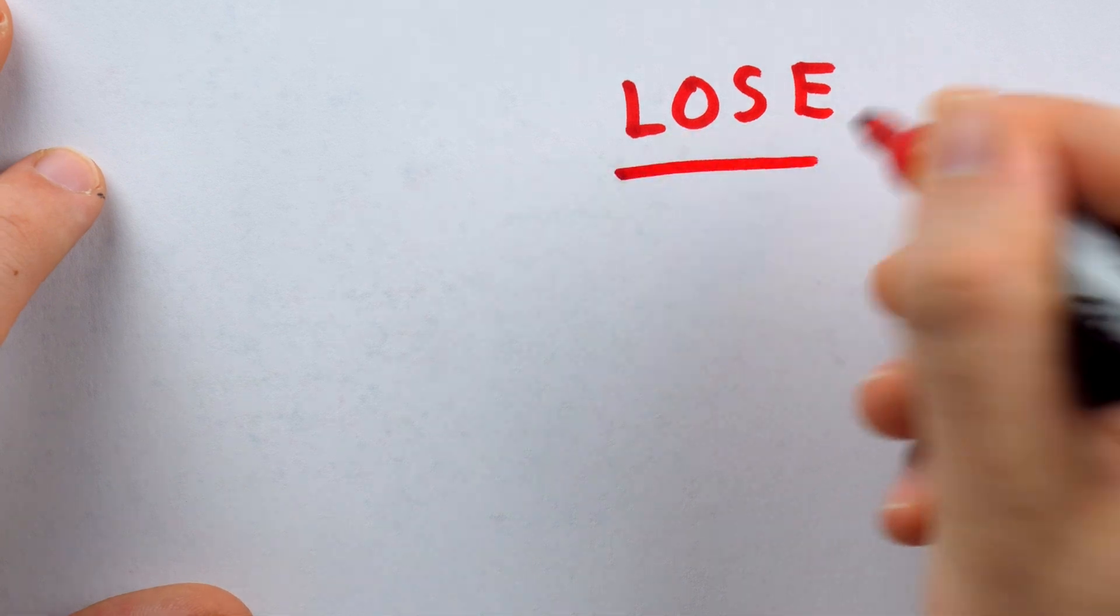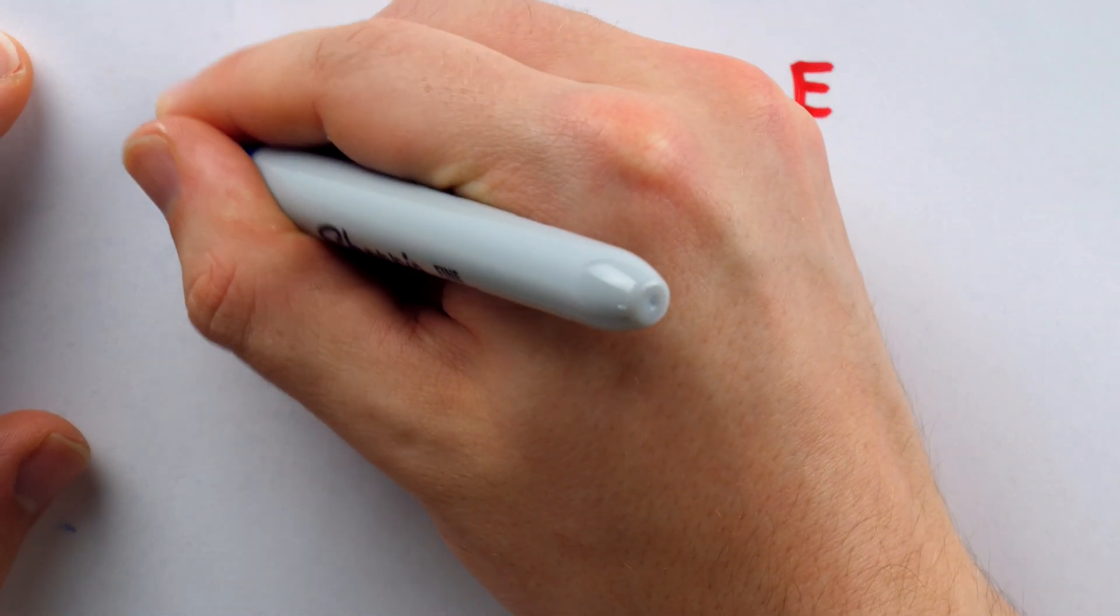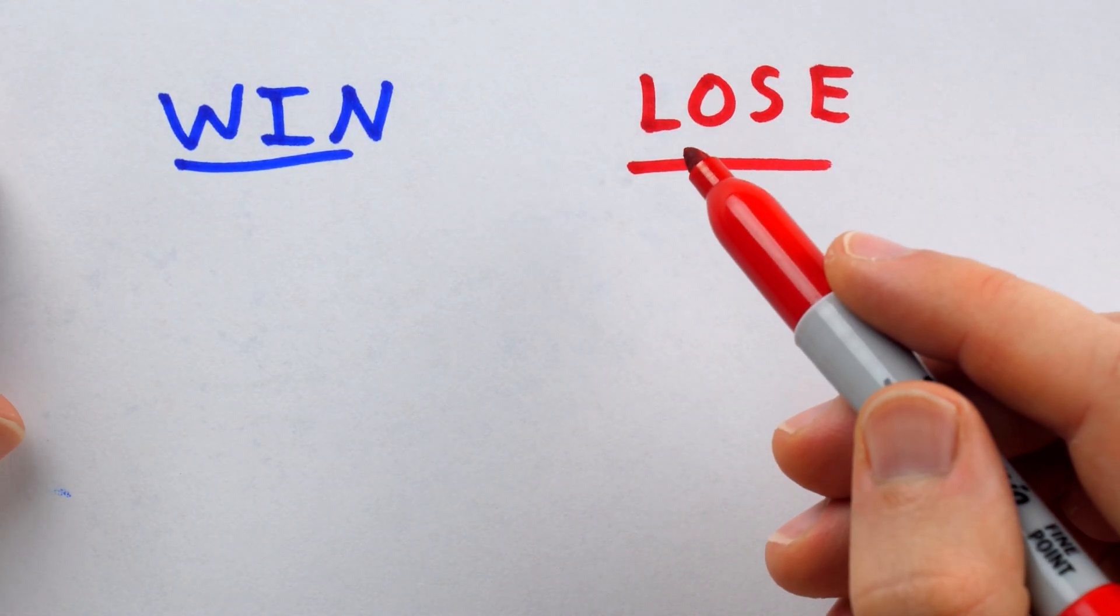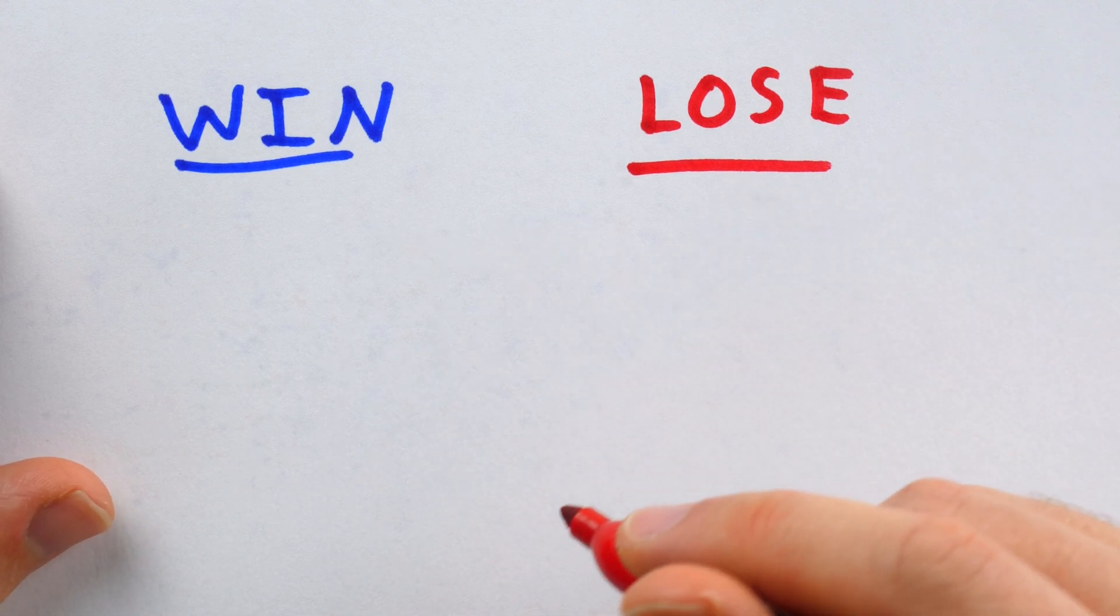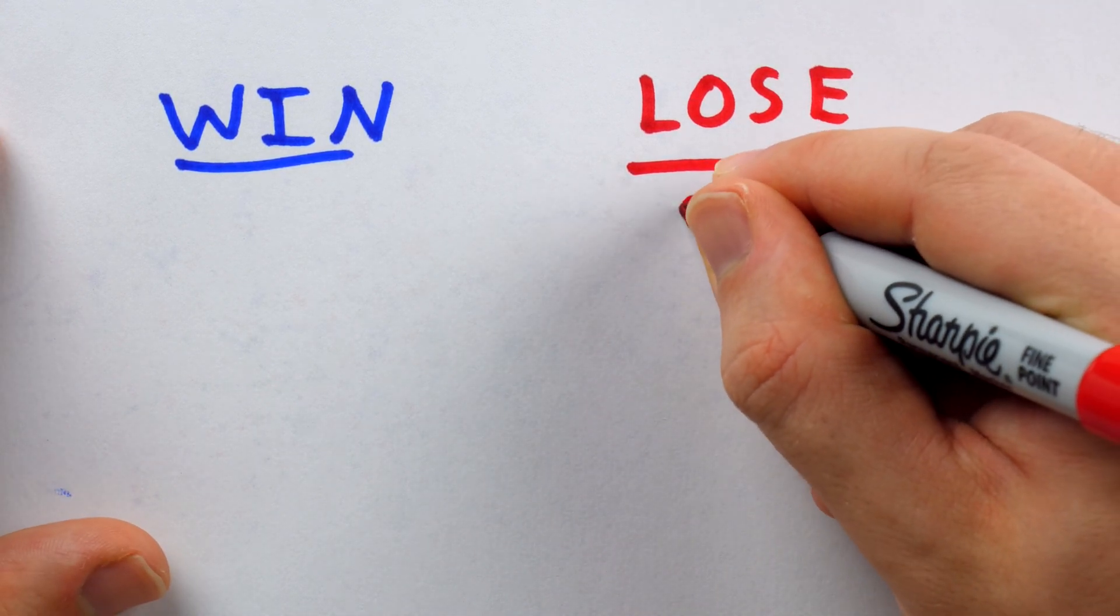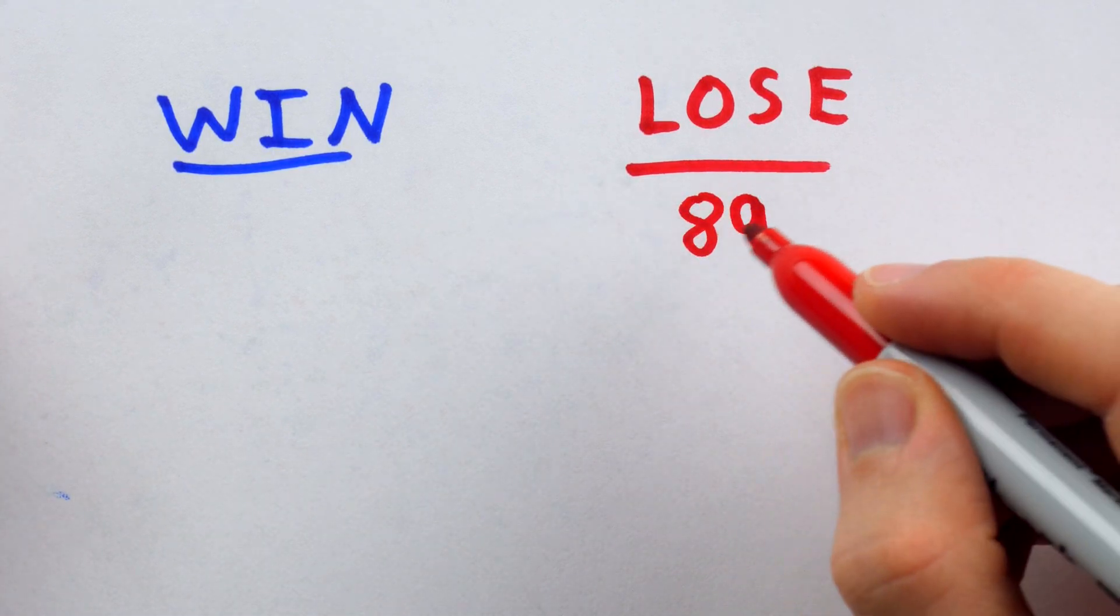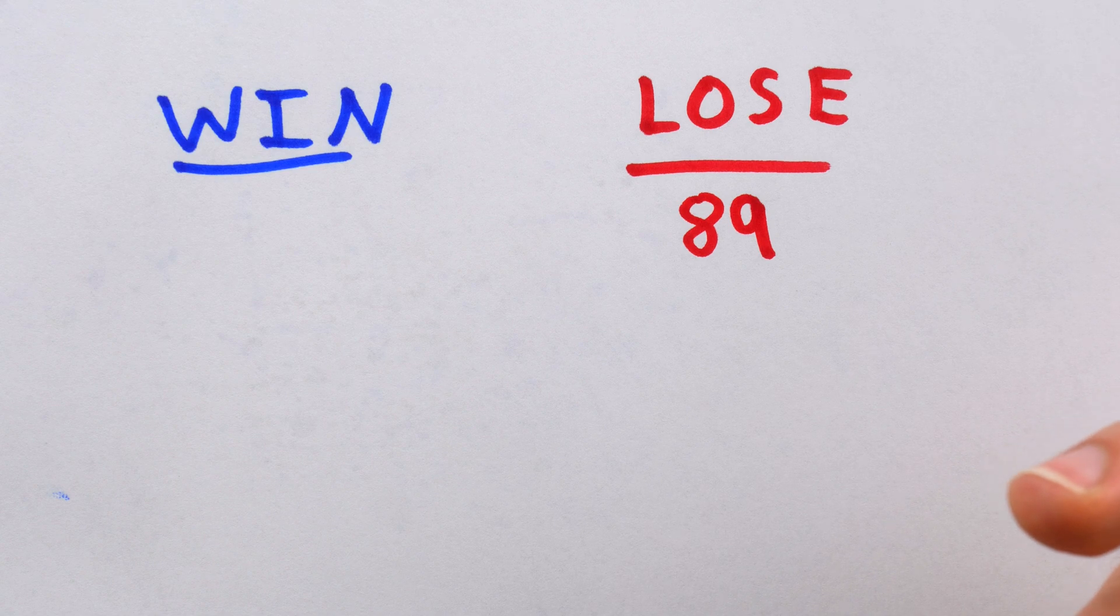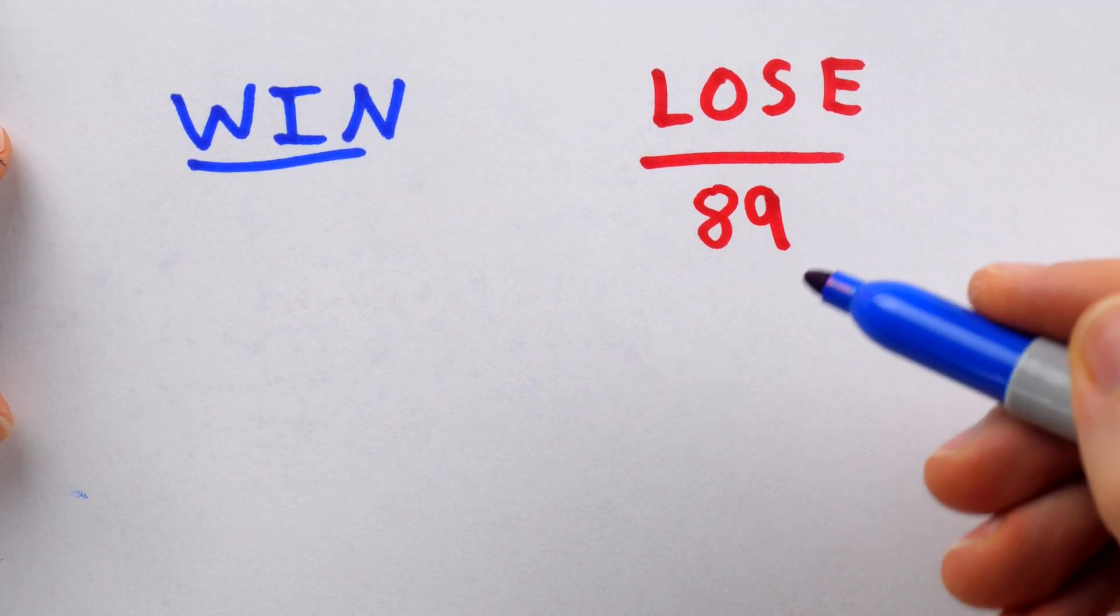And perhaps we can color code these. So, let's put the losing positions in red here on the right, and we'll put the winning positions in blue here on the left. By a losing position, we mean if it's your turn and this is the current subtotal, then you are going to lose. And as we discussed, one such number is 89. This is a position, if it's your turn and 89 is a subtotal, you're going to lose, assuming the other player plays intelligently.